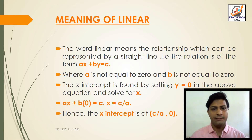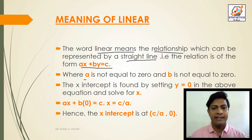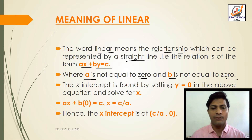The word 'linear' means a relationship which can be represented by a straight line. That is, the relation is of the form AX plus BY equals C, where A is not equal to 0 and B is not equal to 0.